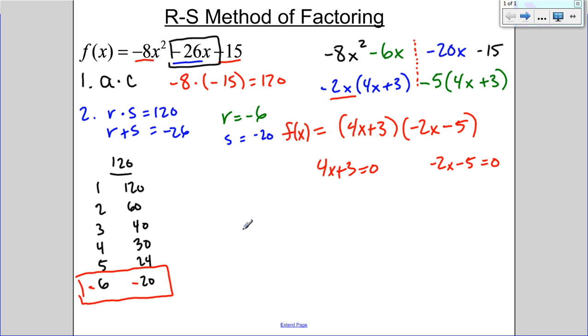So, again, the RS method is awesome for factoring. You can use it when there's an A value involved and when there's just a 1 for your A value. But when there's something in front, guess and check can be a long process. It takes a little bit of time to find these factors. But with a little bit of practice, again, RS method will always work to factor it. And it does get quite quick once you get good at it.